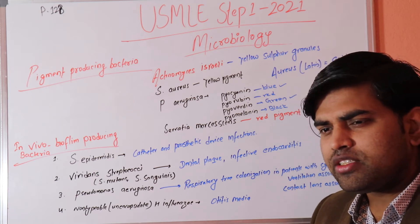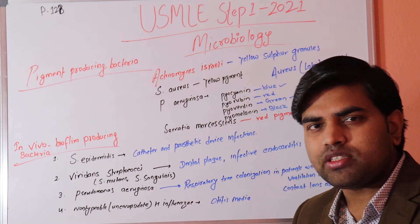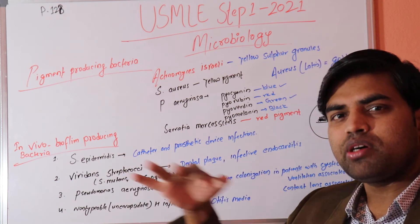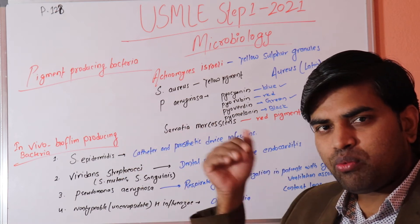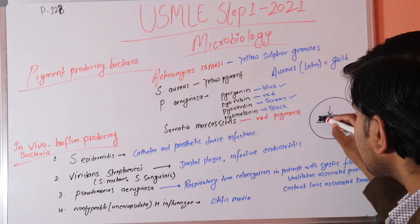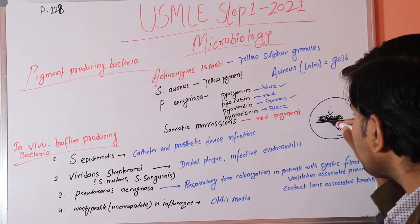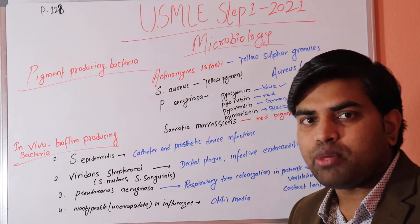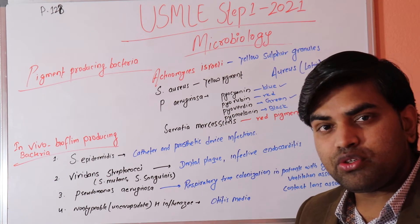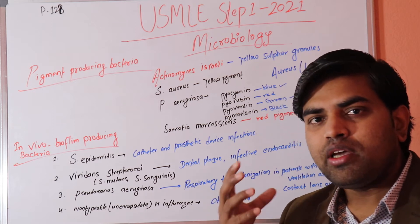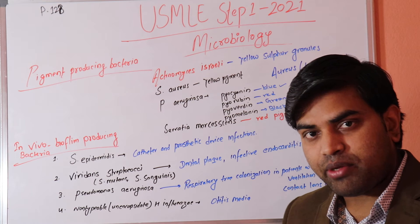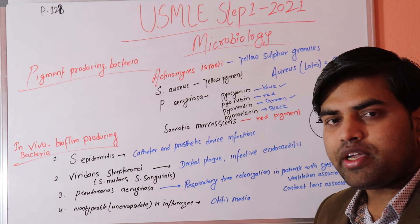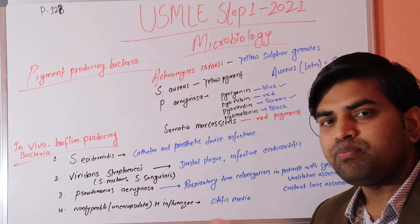Biofilm can form on any surface — including heart valves in endocarditis. Bacteria deposit, reproduce, and form layers. Antibiotics kill only the outer layer, while the deeper primary bacteria persist. This makes biofilm very difficult to remove, and these organisms become medically very important because they are so hard to treat.